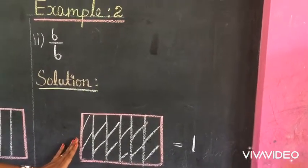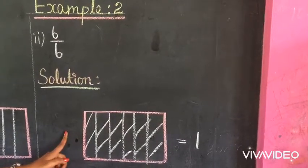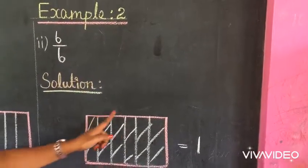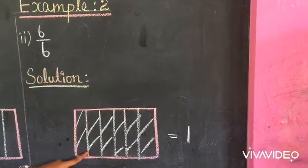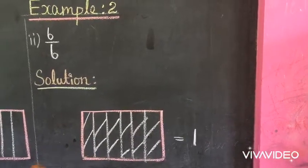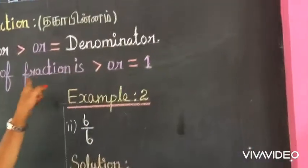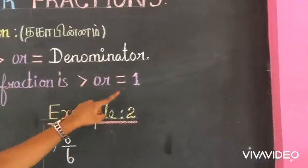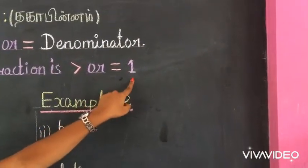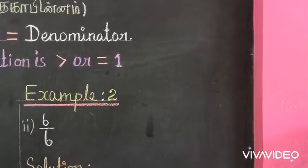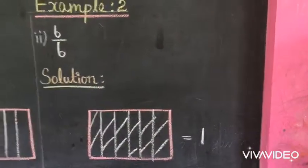It is an improper fraction. Why do we say it is an improper fraction? Because here the value of the fraction is equal to 1. Thank you, students.